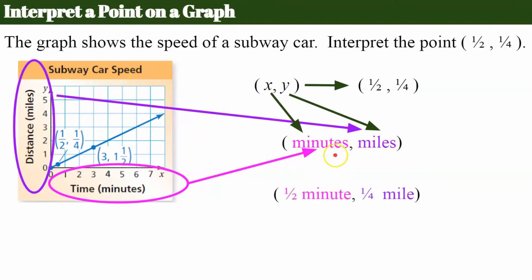So now I know that specifically this point that I'm being asked to interpret is 1/2 of a minute and 1/4 of a mile. So now all I have left to do is write a sentence about this. So there's three key points that you should have in your sentence when you interpret an ordered pair on a graph.